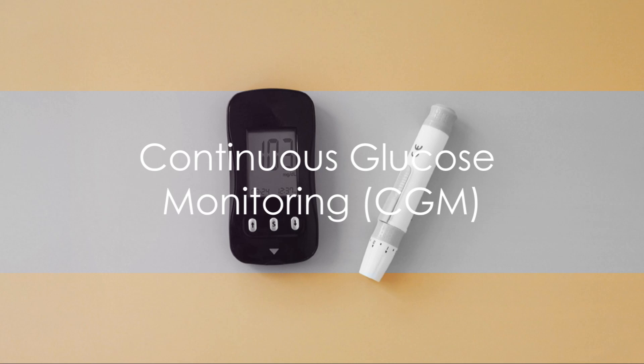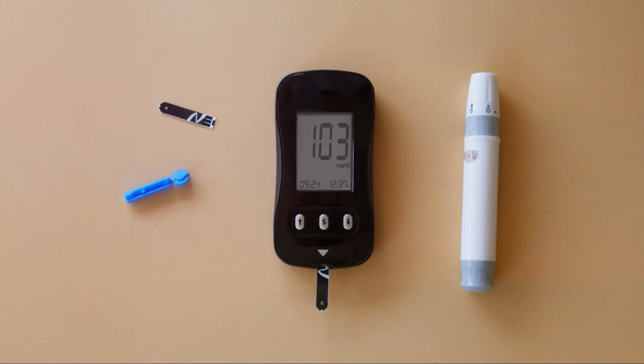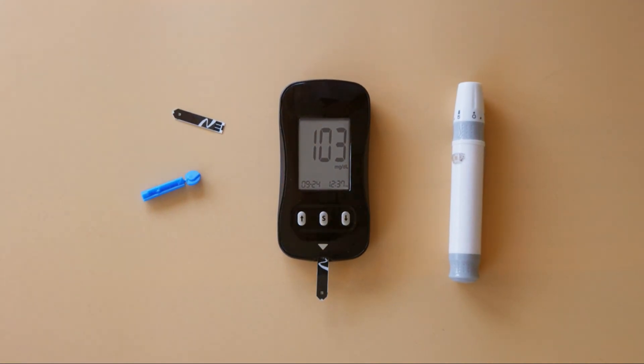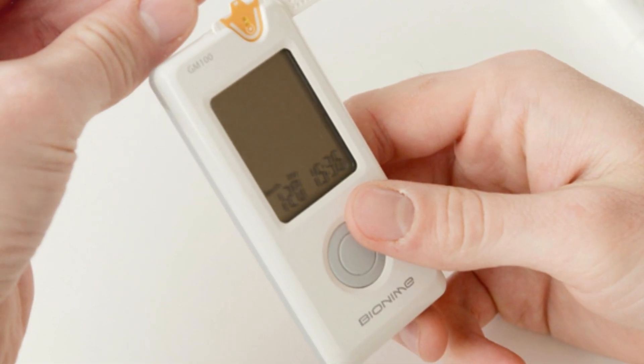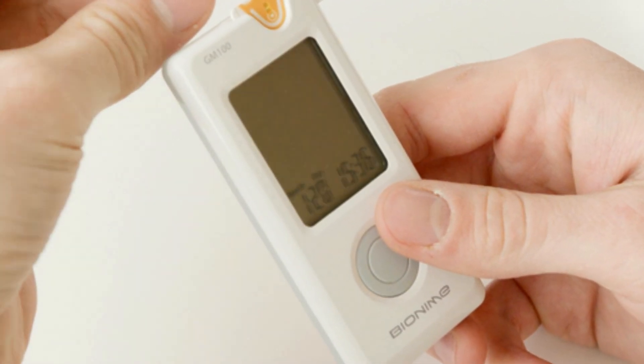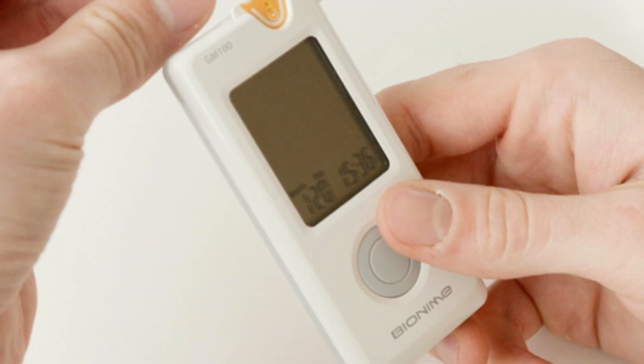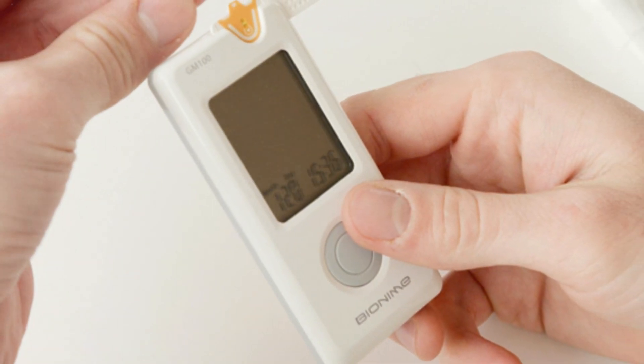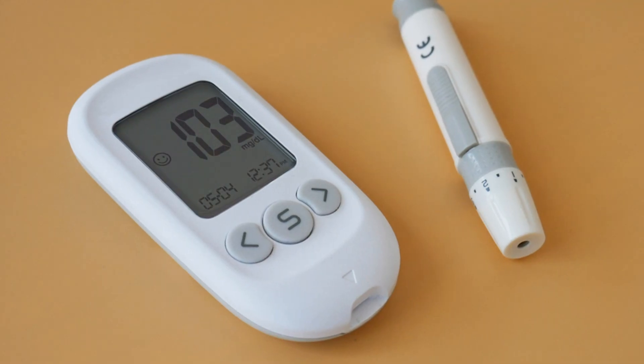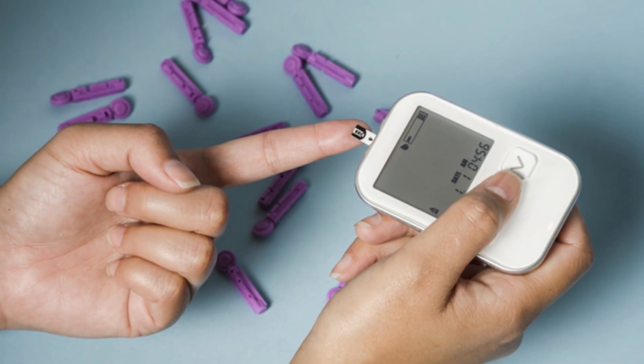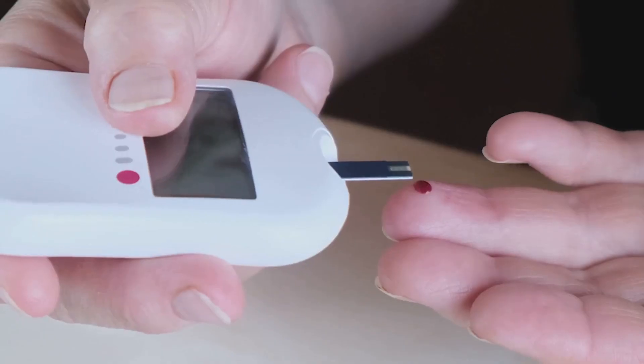Finally, we have continuous glucose monitoring or CGM. This high-tech device allows for real-time tracking of glucose levels, providing a comprehensive picture of your glucose patterns throughout the day and night. It's like having a 24-hour personal glucose assistant. It works by using a tiny sensor inserted under the skin that measures glucose levels in the tissue fluid.